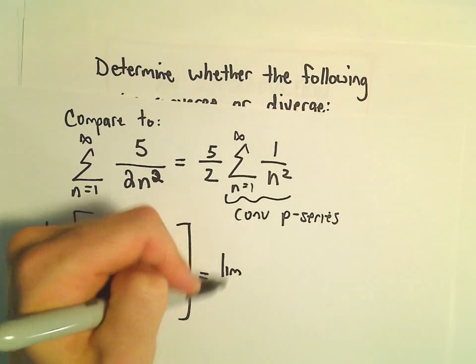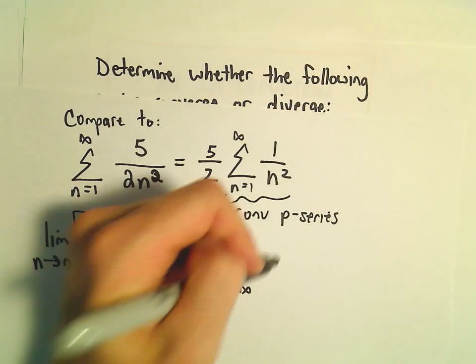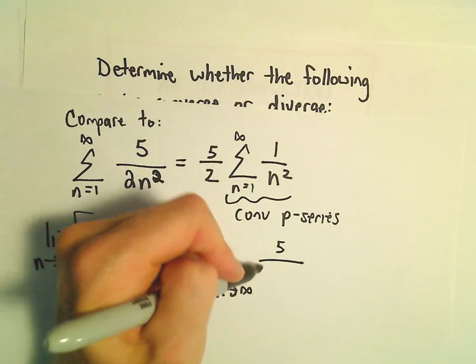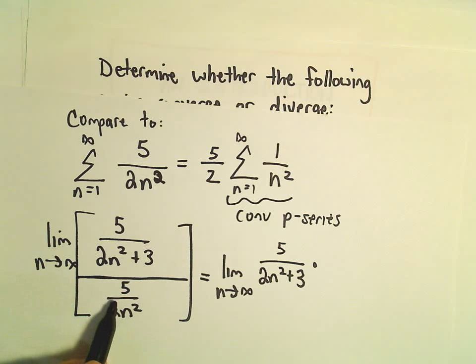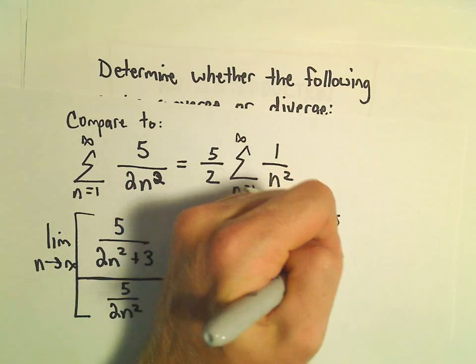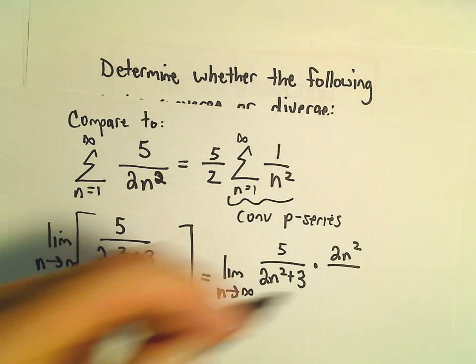Well, that's going to give us the limit as n goes to infinity. We've got 5 over 2n² plus 3. If we flip and multiply, we'll have 2n² over 5.